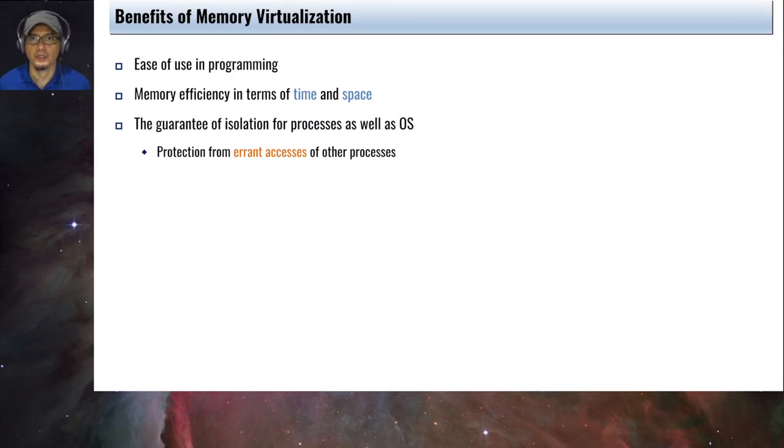What are the benefits of virtualization or memory virtualization? One is the ease of use in programming. With memory virtualization, the programmer doesn't need to know the exact location of the instructions and data in the physical memory. The programmer can assume that he can access all of the main memory. It's also efficient in terms of time and space. And it guarantees the isolation for processes as well as the operating system or the kernel. This way the process, an errant process will not be able to mess up the memory of another process.